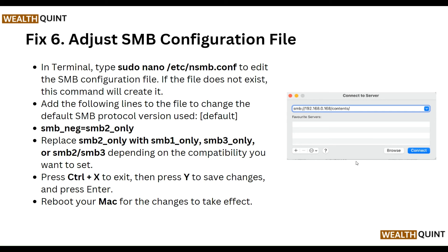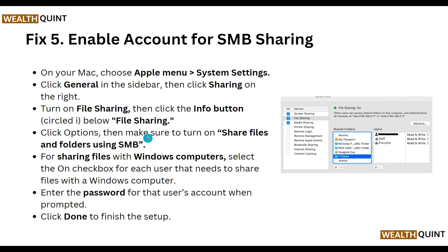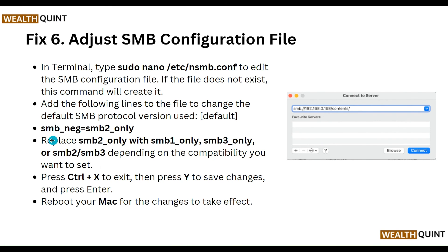Our sixth step is to adjust SMB configuration files. In Terminal, type 'sudo nano /etc/smb.conf' to edit the SMB configuration file — if the file does not exist, this command will create it. Add the following line to change the default SMB protocol version: 'smb2_only' (replace as needed depending on the compatibility you want to set). Press Ctrl+X to exit, press Y to save changes, and press Enter. Reboot your Mac for the changes to take effect.